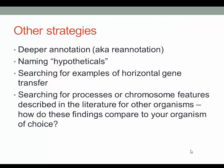Other strategies include deeper annotation, naming hypotheticals, searching for examples of horizontal gene transfer, and searching for processes or chromosome features described in the literature for other organisms. A myriad of approaches and questions can be asked in a gene annotation. There is great value in taking on this task, especially if you move away from well-known model systems. Even today, a significant percentage of genes in most genomes are still called hypothetical or conserved hypothetical during automated annotation, and students can start to move some of these genes out of the hypothetical category into calls that impart much more meaning.